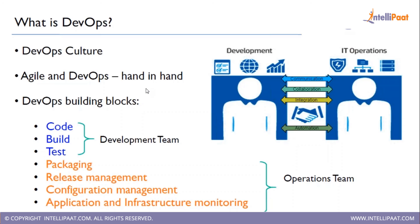DevOps is a culture or process followed across the company, and agile and DevOps go hand in hand. Before DevOps, two models were being used: the waterfall method and agile. The waterfall method was quite old and had challenges, so agile was brought in. Agile was good but had a challenge — not much was automated. DevOps is more focused on automation plus getting feedback between both teams. The various building blocks the development team works on are code, build, and test, while operations handles deployment.